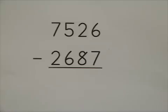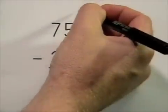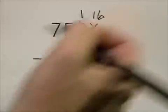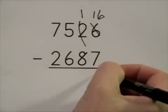We start with the right-hand column, the ones column. 7 is larger than 6, so we'll need to regroup from the tens, making that a 1, making this a 16. 16 take away 7 is 9.